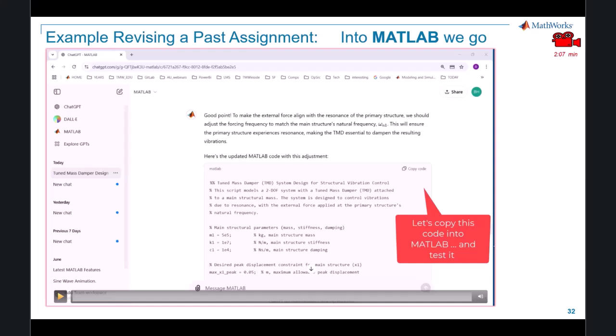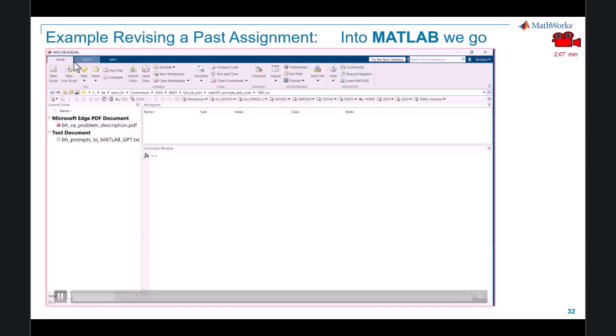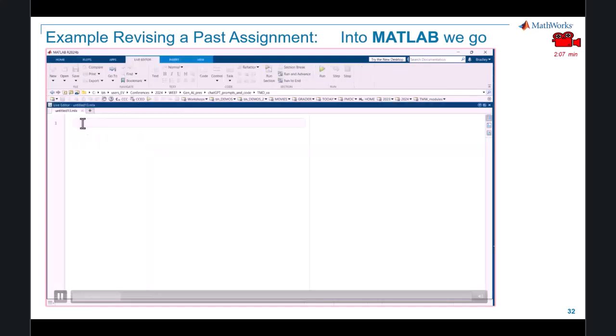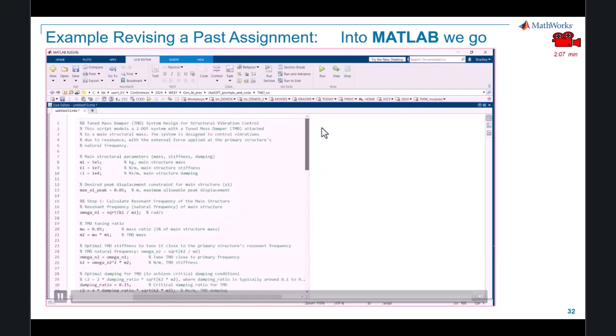So within MATLAB GPT, there's a nice link called copy code. And as its name suggests, you can click on it and it will copy all of the code that MATLAB GPT has created. We'll go to MATLAB desktop and we'll open ourselves a brand new script and we'll paste in the code produced by MATLAB GPT. And from here, we'll do some very minor edits.